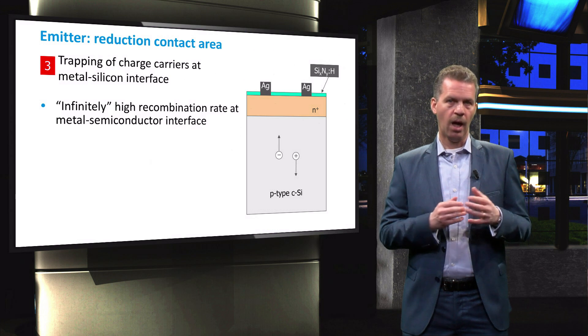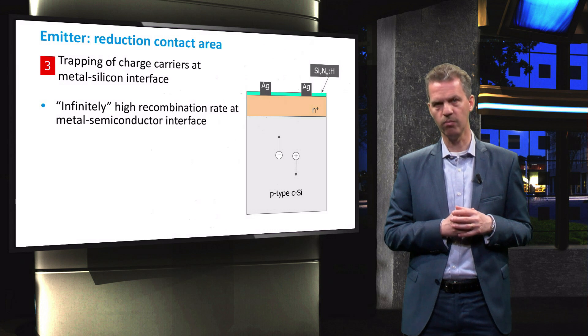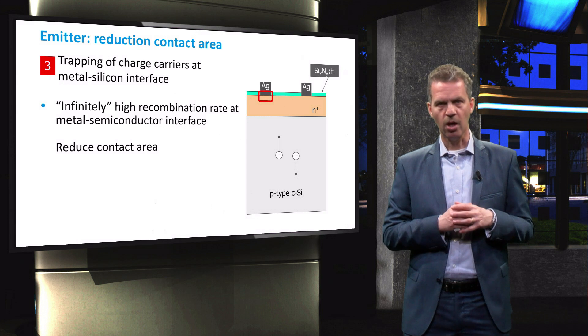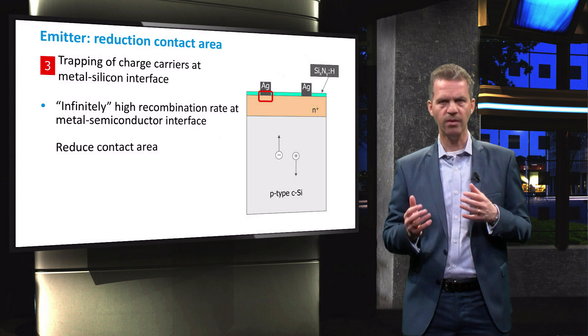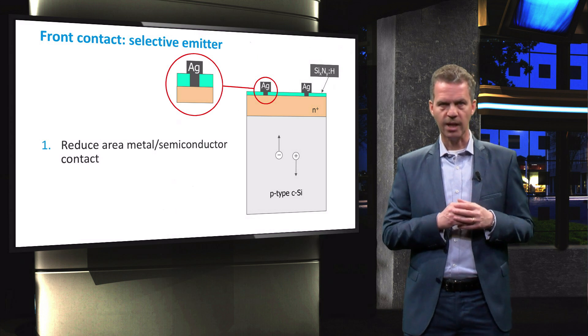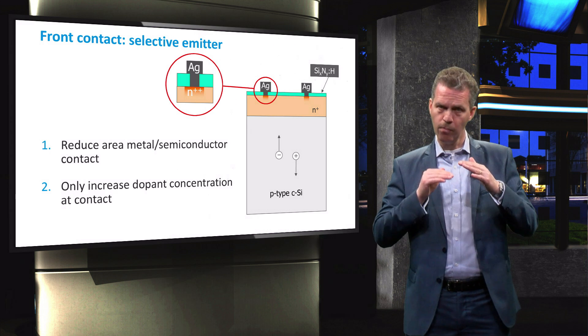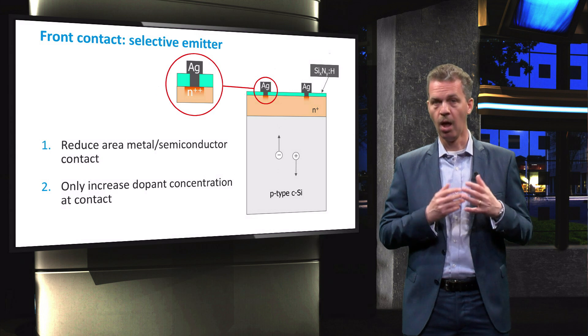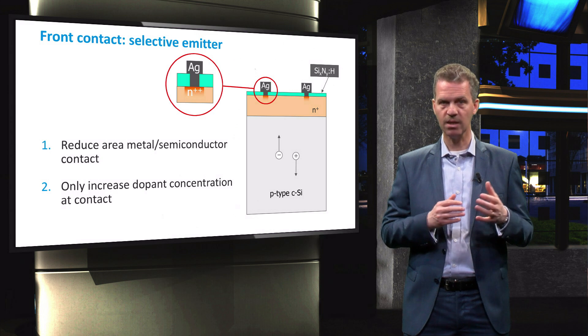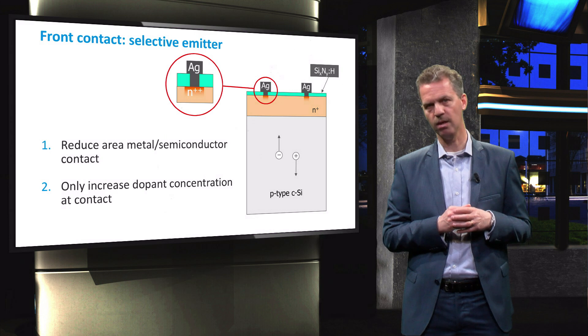Before we discuss this solution, we will first take a look at the interface between the metal and silicon in somewhat more detail. At this interface, the recombination rate is almost infinitely high as the minority carriers will virtually instantaneously recombine with the free charge carriers in the metal. The design approach is therefore to reduce the contact area between the metal and the silicon. Starting with the standard design of a front contact on a passivated silicon wafer, the contact area of the metal and the silicon is reduced. On top of that, only the area below the metal-silicon interface will be doped with a higher doping concentration. This design is called a selective emitter or selective contact, since the minority carriers will be repelled from the metal-silicon interface, reducing the recombination rate at the interface even further.